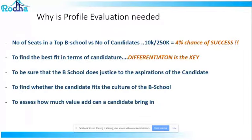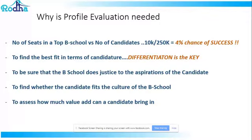Let's first start understanding why profile evaluation is needed. How many seats are there in the top B-schools? When I say top B-schools, I'm not only considering the IIMs. It includes IIMs along with colleges like SPJAIN, MDI, FMS, XLRI — around the top 20-25 institutions of the country. The number of seats on offer from these top B-schools will not be more than 10,000, while the number of candidates writing CAT is close to two and a half lakhs. From a probability perspective, you have around a 4% chance of success — only four out of every hundred people writing the test will get into a top B-school. That's one of the most important reasons why profile evaluation becomes a critical aspect.